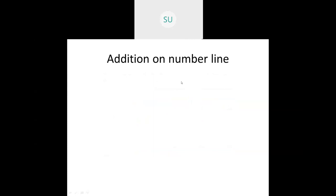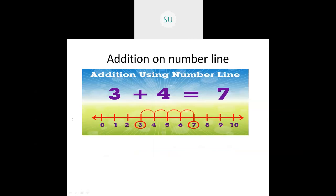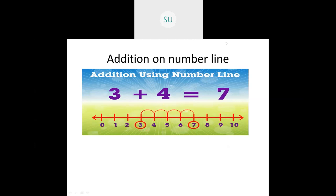Next we have addition on the number line. A number line is a straight line with numbers written at equal distances. Here they've done three plus four. They have circled the number three, then counted four steps because it is three plus four — plus one, two, three, and four. The number we stopped on is seven. So three plus four is seven. This is how you do addition on a number line.